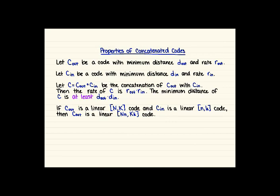So when we concatenate these codes, they sort of combine the properties of the codes that we're concatenating here. If Cout is our outer code and that has minimum distance dout and rate rout, and Cin has minimum distance din and rate rin.